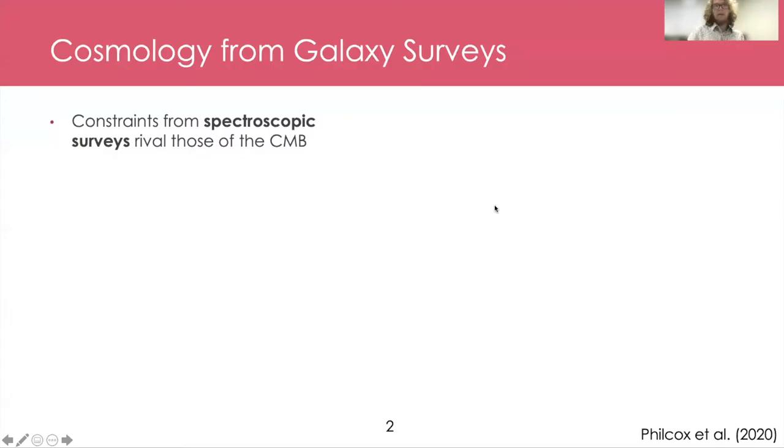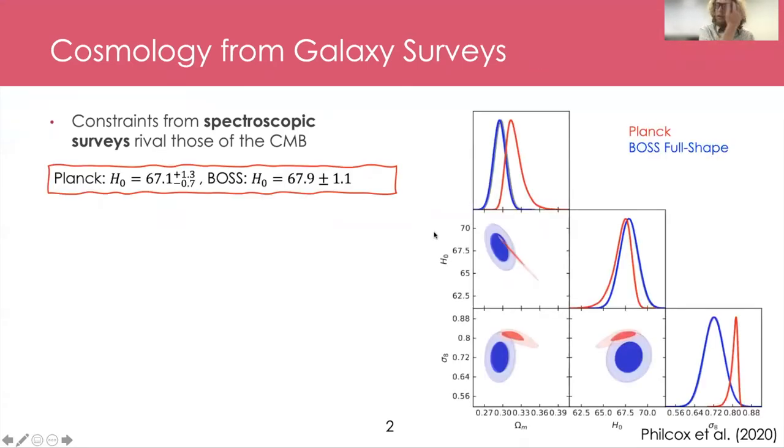So to kick off, let's start by thinking of the current state of cosmology using galaxy surveys. Within the last few years, we've reached the point where constraints from spectroscopic galaxy surveys on cosmological parameters, for example the Hubble parameter, are now rivaling the precision we can get from the cosmic microwave background. These are some recent constraints on the Hubble parameter, the matter density and sigma eight from in red, Planck, versus in blue, the BOSS galaxy survey. For H naught, the constraints we get from galaxy surveys, plus or minus one, are actually now very much comparable with those from Planck, plus 1.3 minus 0.7 here.